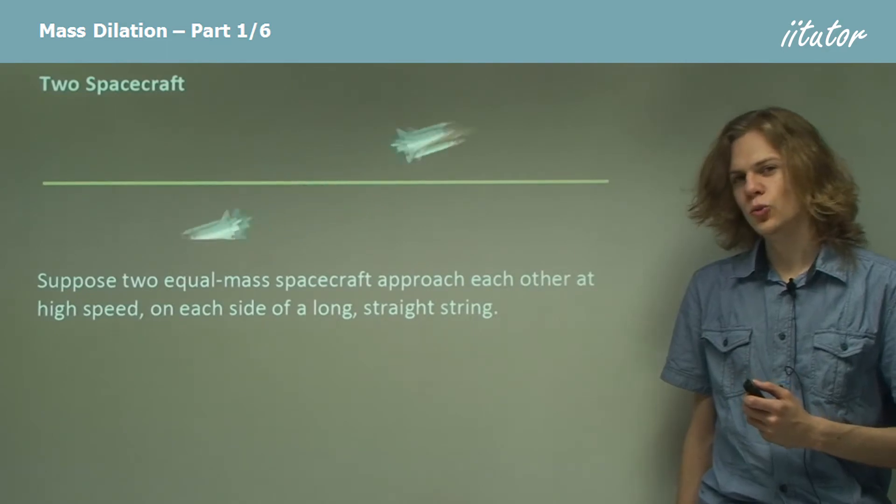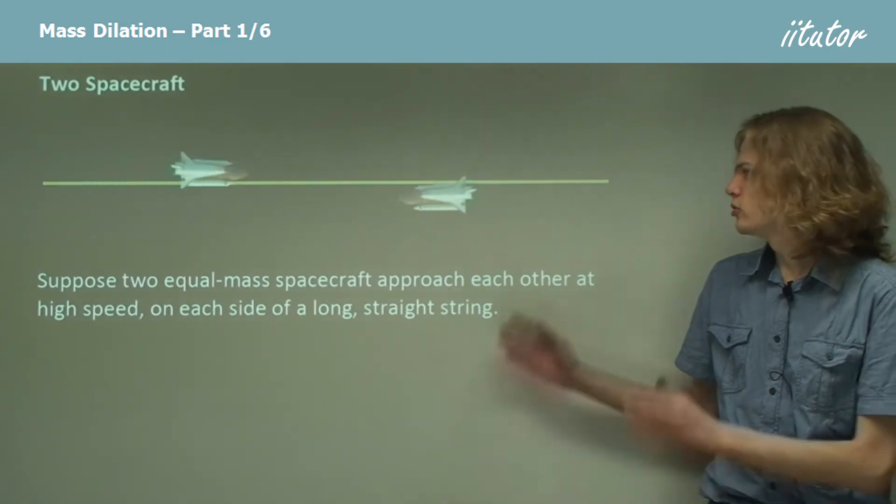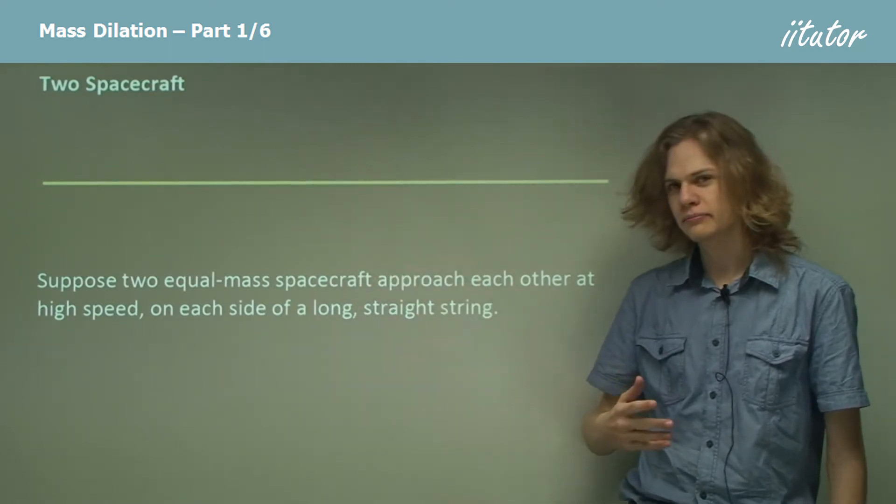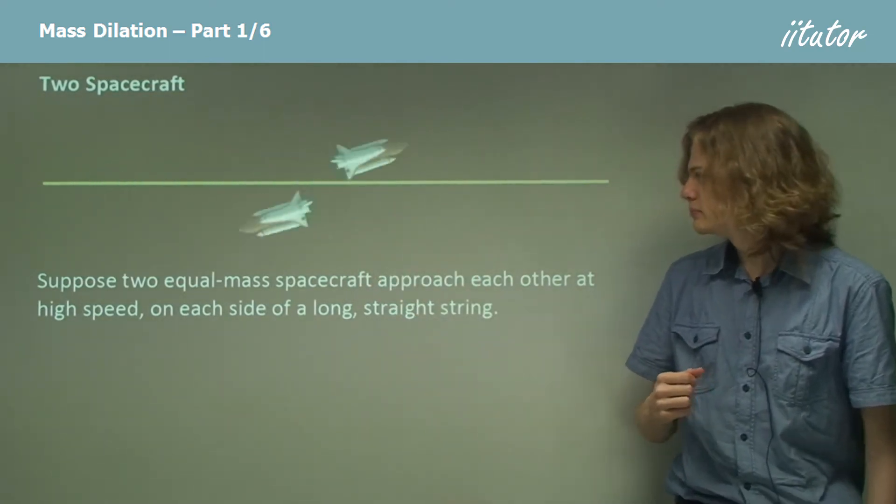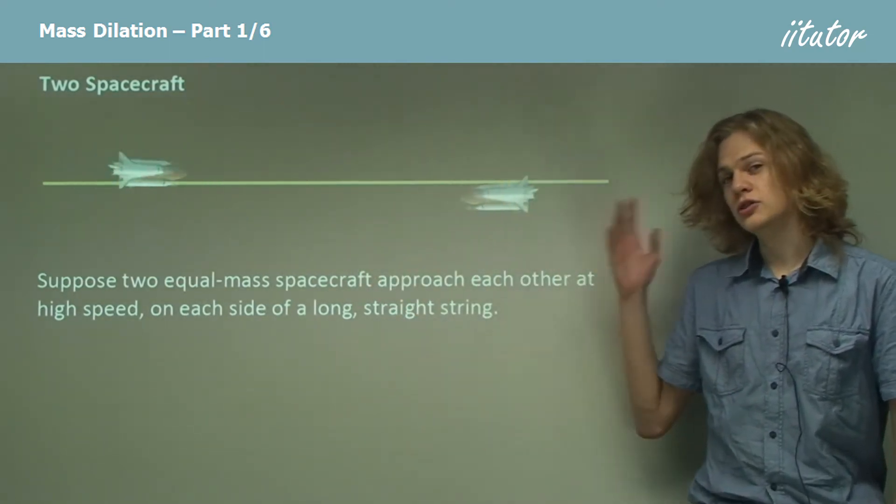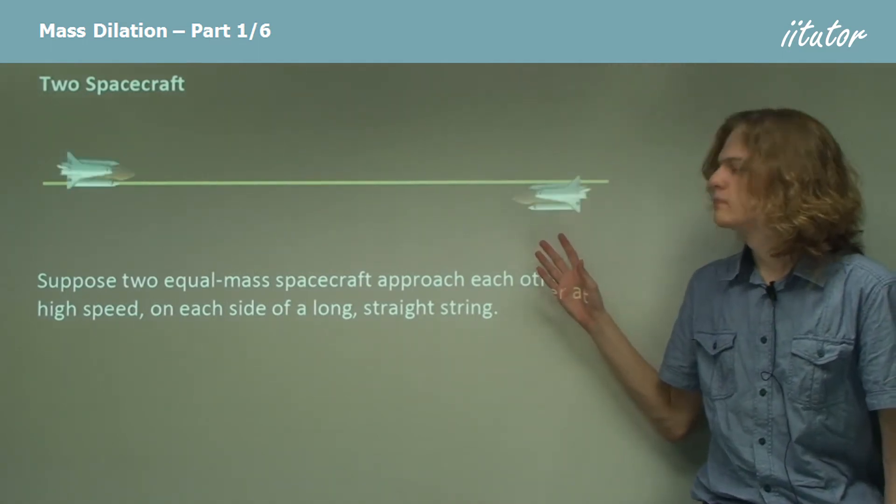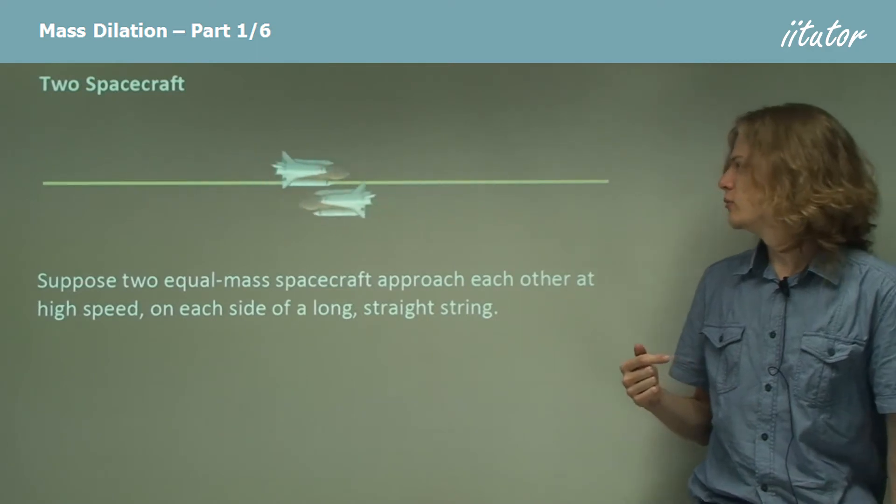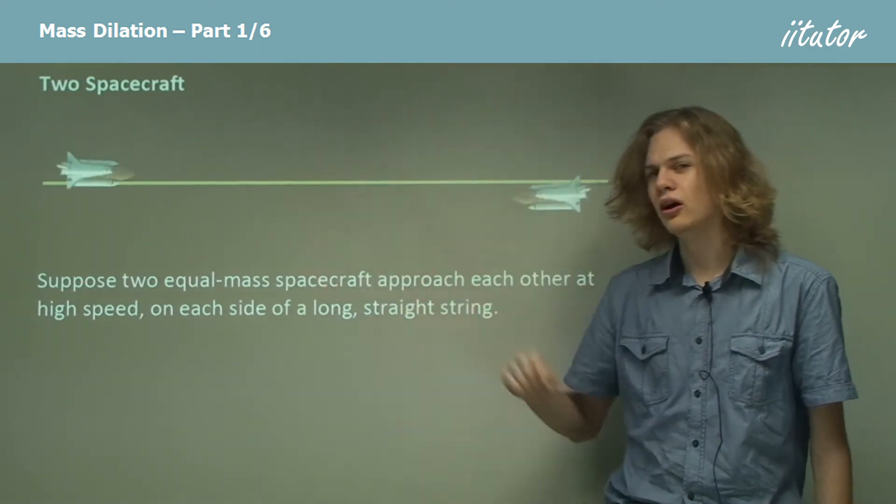So here we have a short animation showing us two spacecraft coming close to each other and colliding. So we say that the spacecraft are of equal mass and they're approaching each other at the same speed. And we can see that they're rebounding a little bit afterwards.